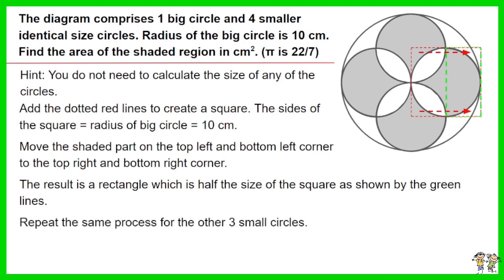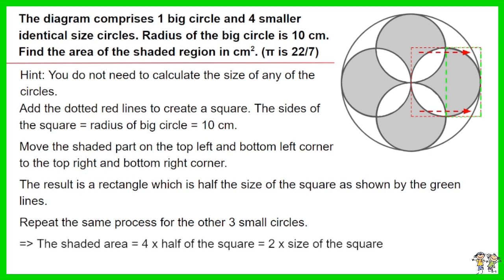Repeat the same process for the other three small circles. Thus the shaded area equals 4 times half of the square, which equals 2 times the size of the square.